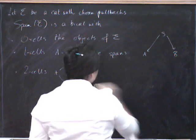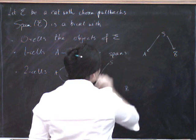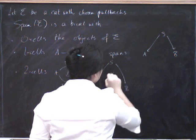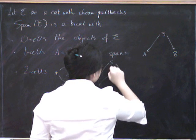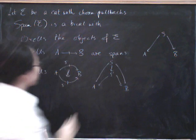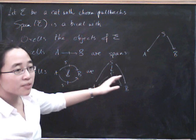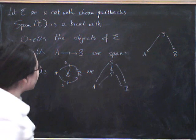So a two cell, well what does this mean? It means we've got a span S and we've got another span S prime, and we're going to have a morphism of spans which makes this diagram commute.